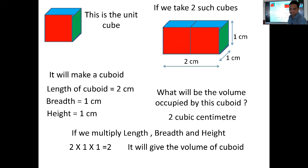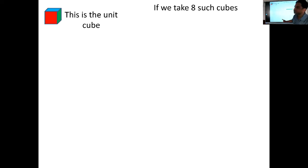So volume of the cuboid is given as length multiplied by breadth multiplied by height. Now we'll take one more unit cube. We'll take now eight such cubes: one, two, three, four. Four we have. This will make a cuboid.